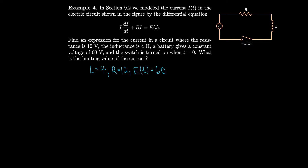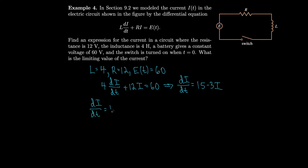We rewrite the equation as 4 times di/dt plus 12i equals 60, then solve for di/dt to get di/dt equals 15 minus 3i, with initial value i(0) = 0. To integrate, we multiply by dt on both sides and divide by (15 minus 3i), so we get the integral of di over (15 minus 3i) equals the integral of dt, grouping all i terms with di and all t terms with dt.